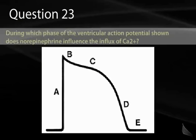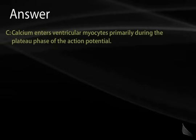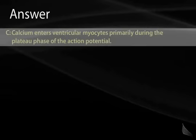Question 23. During which phase of the ventricular action potential shown does norepinephrine influence the influx of calcium — A, B, C, D, or E? The correct answer is C, which corresponds to the protracted positive plateau potential found in ventricular action potentials. This is due to the opening of voltage-gated, long-lasting calcium channels, known as the L-type calcium channel.